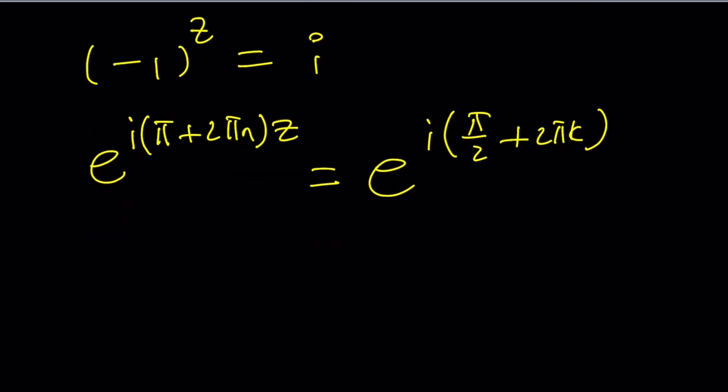Great we have e on both sides so we can natural log get rid of the e and then of course i cancels out and then I'm going to set these equal to each other. Pi plus 2 pi n multiply by z equals pi over 2 plus 2 pi k. Awesome.